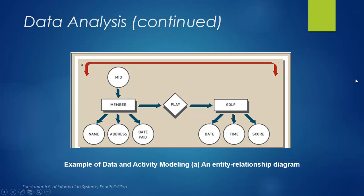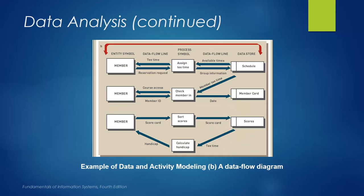This slide shows an example of a data entity relationship diagram where two identified entities in the system — member and golf — have been connected through the relationship 'member plays golf.' Another slide shows an example of a flow diagram showing different activities within the system, such as assigning time, scheduling, checking member, creating card, sorting scores, and recording scores.